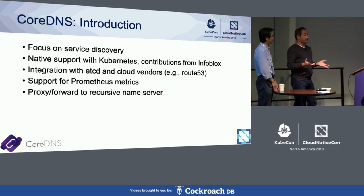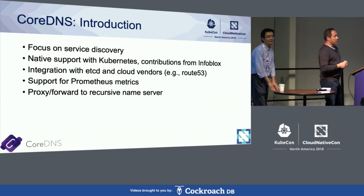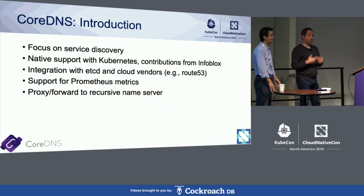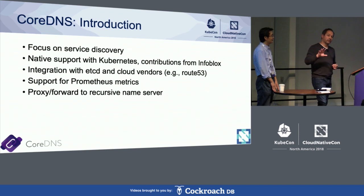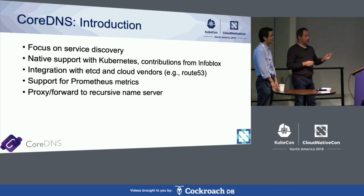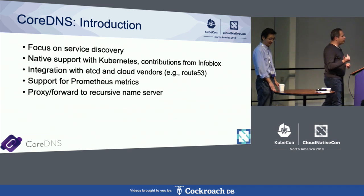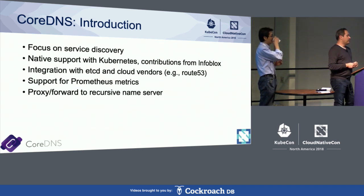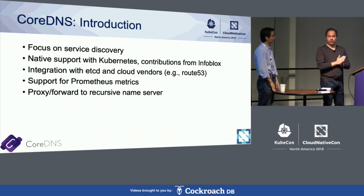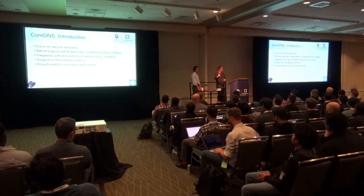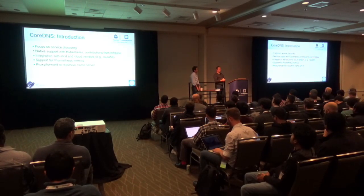CoreDNS's focus really is on service discovery. There is native support for Kubernetes via a Kubernetes plugin which allows you to get service discovery information directly out of Kubernetes and publish it via DNS. There's also direct integration with etcd, and integration with AWS Route 53. There's support for metrics using Prometheus. You can also forward to a recursive DNS server or proxy for other name servers. Today CoreDNS cannot act as a full-service recursive DNS server — it can't start at the root of the namespace, follow referrals, and find authoritative name servers, so it relies on another name server like BIND or Unbound to do that.